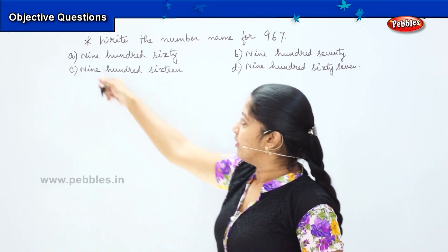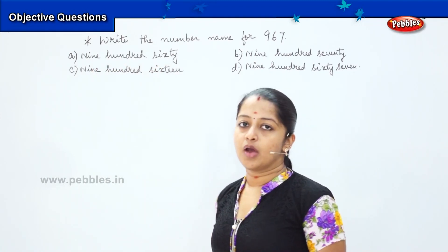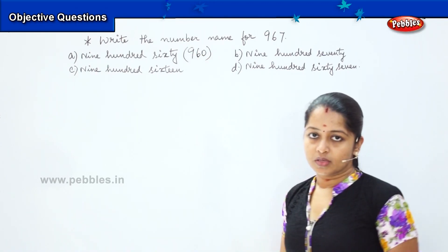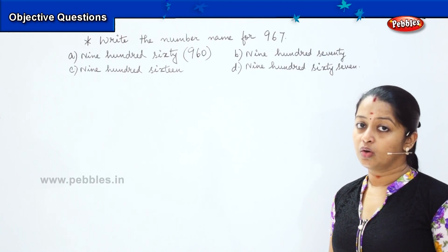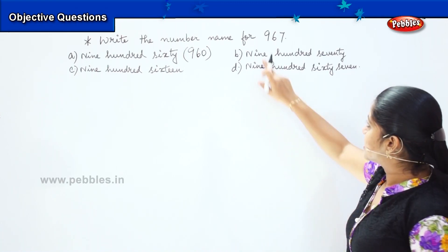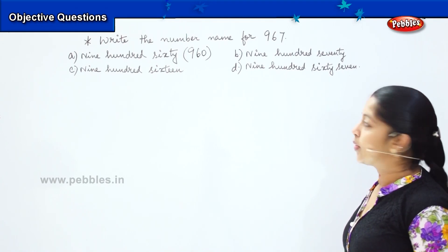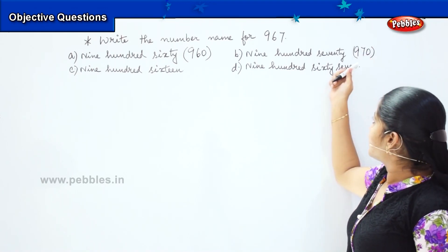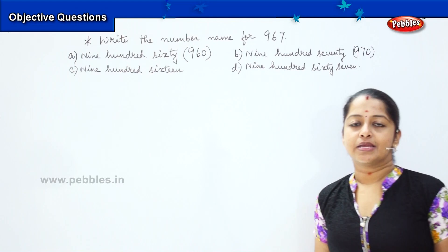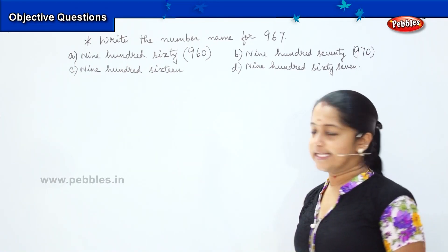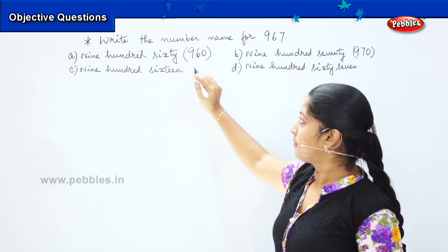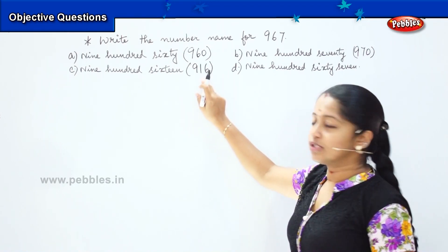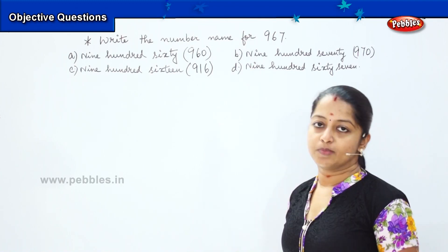We will try to solve them one by one. The first option is 960 — how will you write that? We write it as 960. Is it matching with our question? No. We move to the next option, which is 970. How will you write that? We write it as 970. This option is also not matching. The third one says 916 — how will you write it? You write it as 916. This option also does not match.